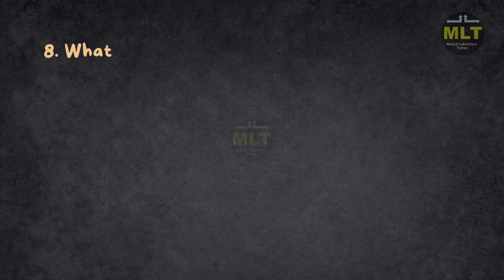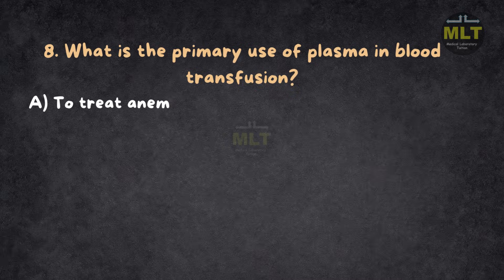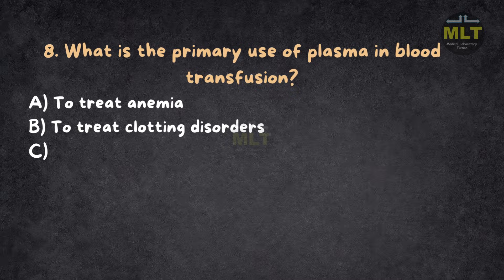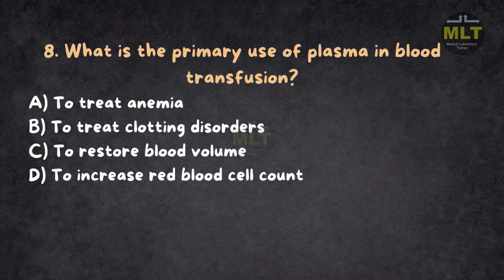Question 8: What is the primary use of plasma in blood transfusion? Option A: To treat anemia. Option B: To treat clotting disorders. Option C: To restore blood volume. Option D: To increase red blood cell count. Correct answer: B, to treat clotting disorders.